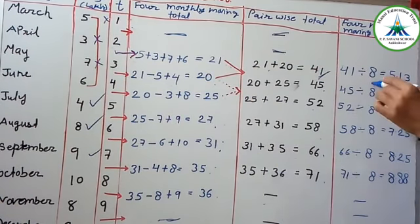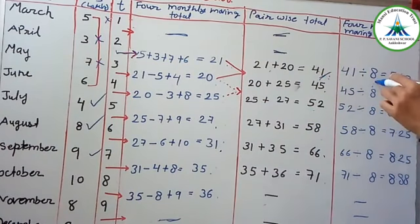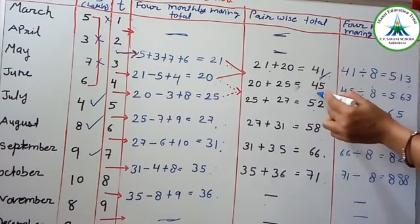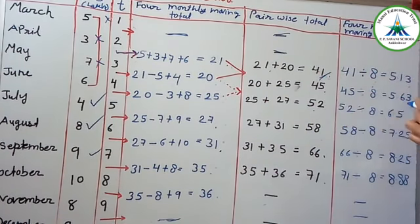So the answer is 5.13. And this is 4 because this is 4 plus this is 4. We have to find out the pairwise total. If we find out 21, then we can divide by 4. But the pair of total is divided by 8.